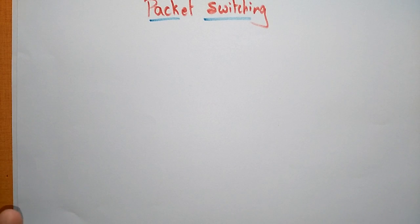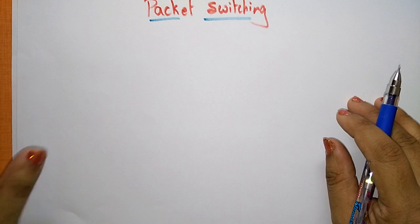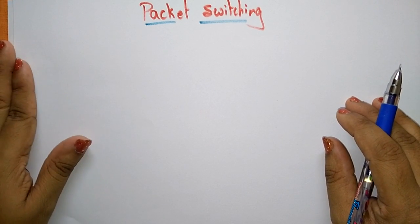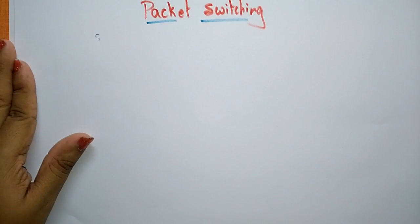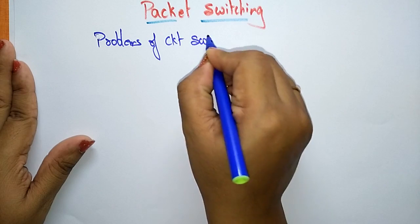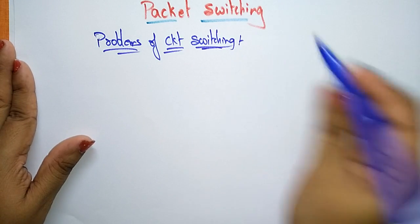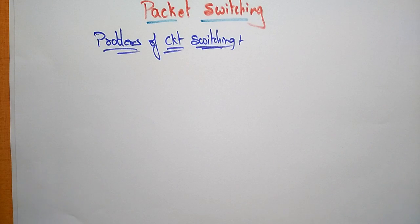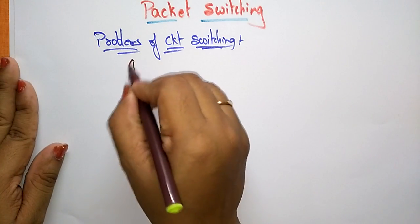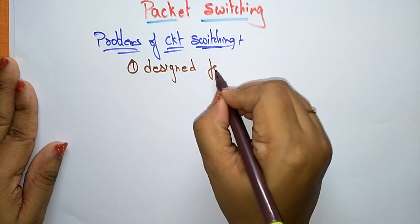Even though there is circuit switching, why are we shifting to packet switching? Because of some problems that circuit switching faces, the technology is changing to packet switching. The first problem is that circuit switching is only designed for voice service. Even though data is transferred, it is not that efficient. Circuit switching is mostly used in public telephone networking because the most important thing there is voice communication.